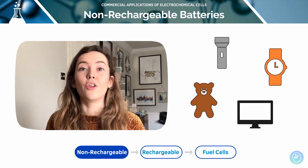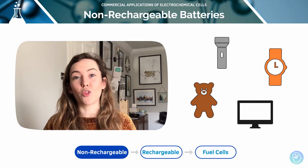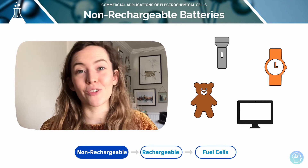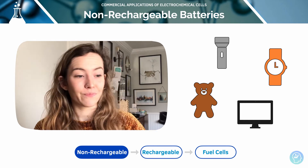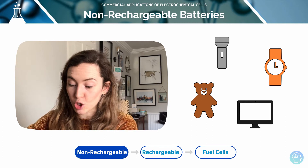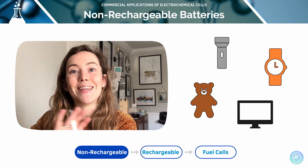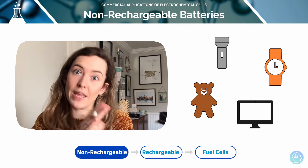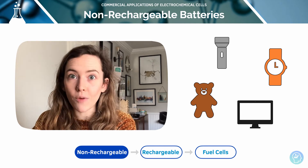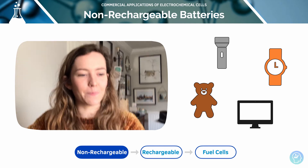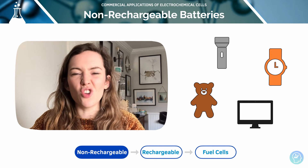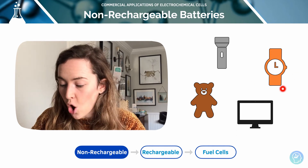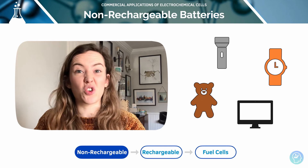All non-rechargeable batteries work on the principle that one species is more easily oxidised than the other. The voltage of non-rechargeable batteries can be worked out by calculating the difference between the standard electrode potentials of each half cell, as we learned in the previous lesson. We can use non-rechargeable batteries for all sorts of things: torches, watches, toys, and electronic equipment.